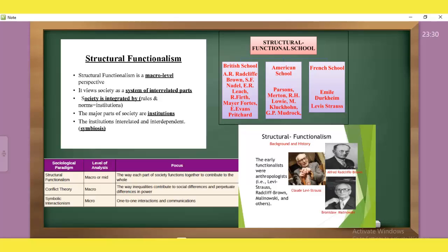If we talk about in general, structural functionalism approach, conflict theory, symbolic interactionism, these three sociological paradigms. Structural functionalism level of analysis is macro. Conflict theory is macro but in symbolic interactionism level of analysis is micro. One-to-one interaction is focused on communication. Structural functionalism also has some divisions. One of the biggest schools is A.R. Redcliffe Brown, Nadel, Leach, Evans-Pritchard. American school is Talcott Parsons, Robert Merton, Murdock. French school Emile Durkheim, Levi-Strauss.